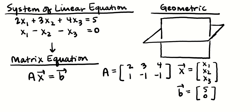Geometrically, this system is represented by two planes in space, because we have two equations and three variables. Just by thinking about how this works, provided the two planes are not parallel, they're going to intersect — and where they intersect, they intersect in a whole line's worth of points. So this is going to have infinitely many solutions, just provided they aren't parallel. We'll have more to say about that in a few minutes.